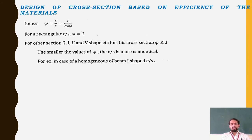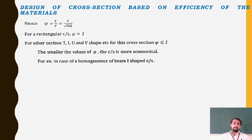Using this formula, the efficiency factor φ = F / F' = F / √(6KB). For a rectangular cross-section, φ equals 1, and for other sections — T, I, U, and V shapes — φ is less than or equal to 1. The smaller the value of φ, the more economical the cross-section.